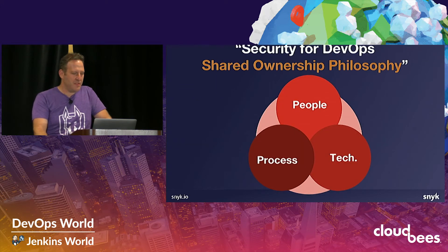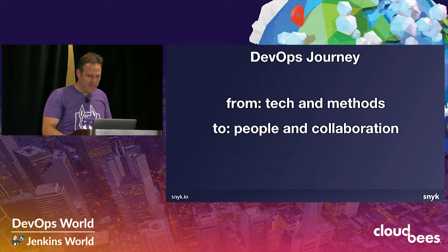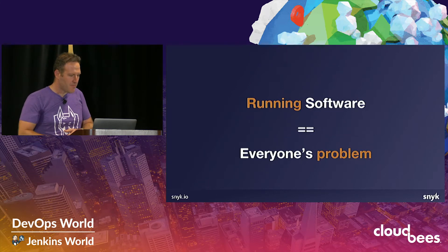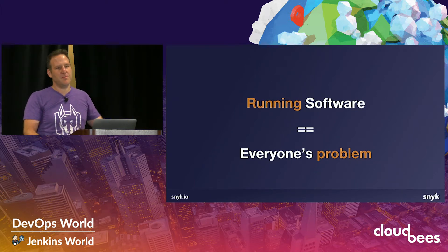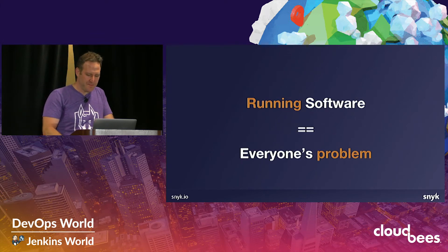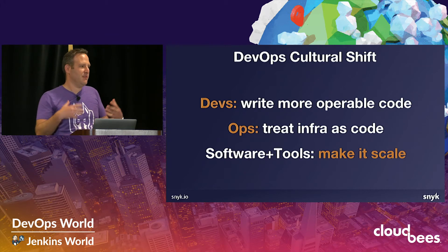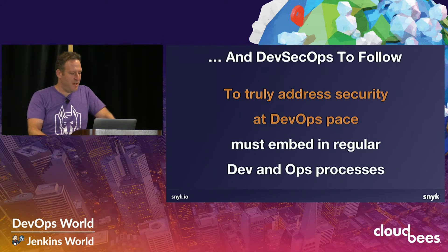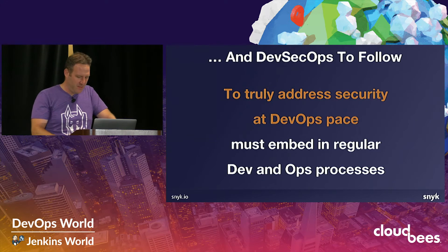This brings me to the third interpretation of DevOps, which is a shared ownership philosophy with overlap between process, tech, and people. The DevOps journey taught us to stop thinking just about tech and methods, and instead think about people and collaboration. Running software is everybody's problem — going against the old problem of developers throwing their code over the fence and having ops people manage it for them. The cultural shift means today developers want to write more operable code, ops treat infrastructure as code, and there's a plethora of software and tools to make all this work at scale. DevSecOps is following suit.